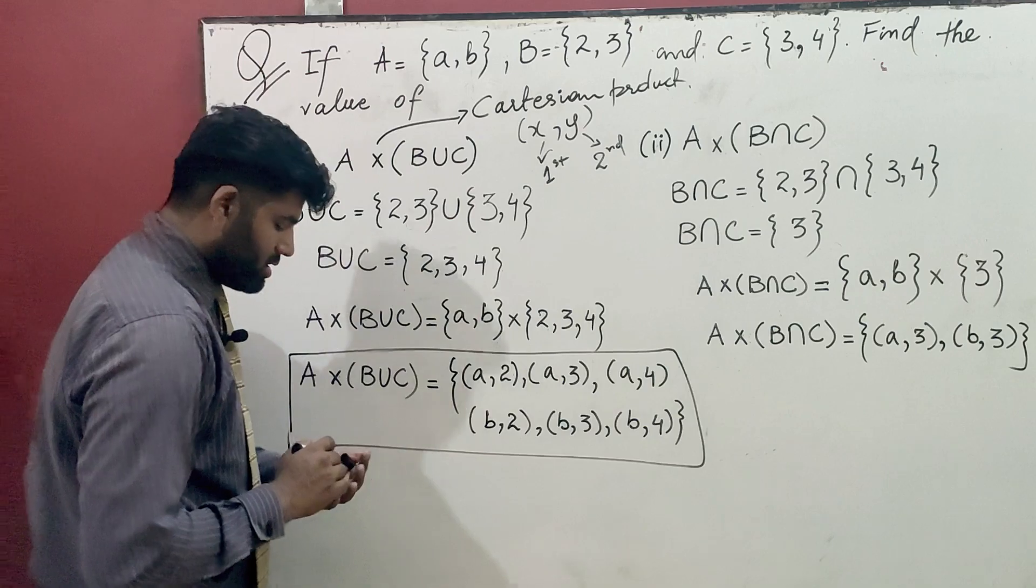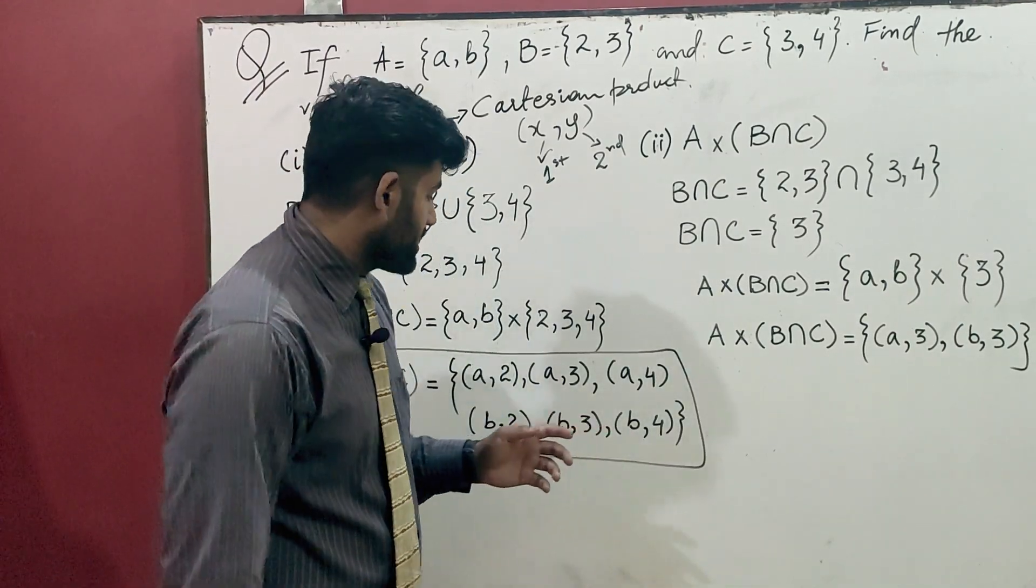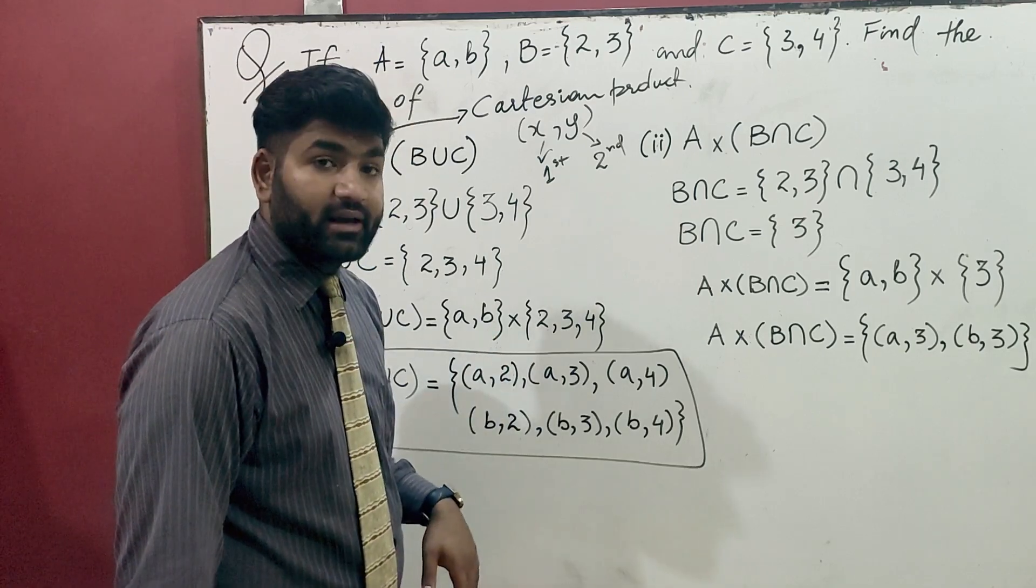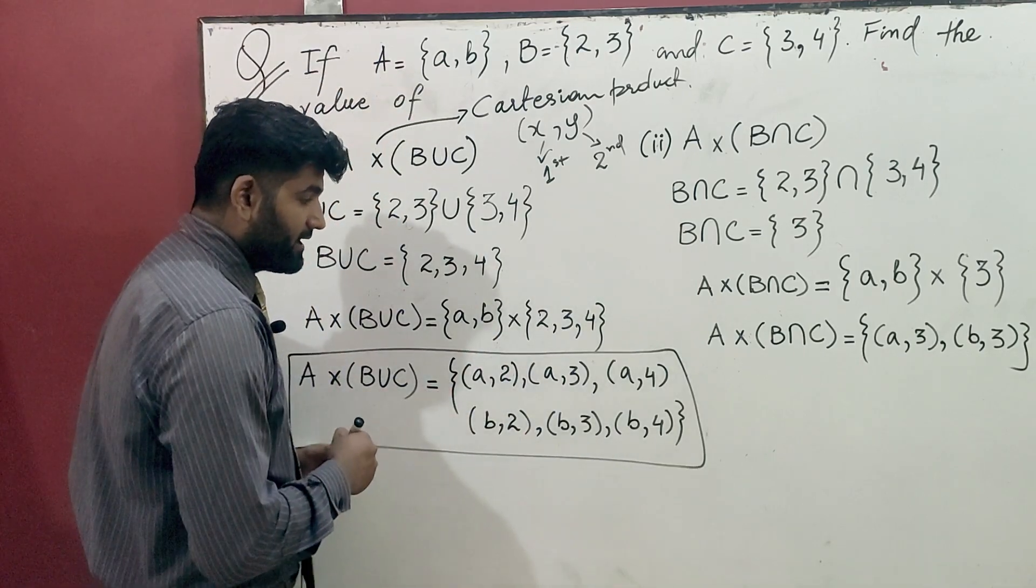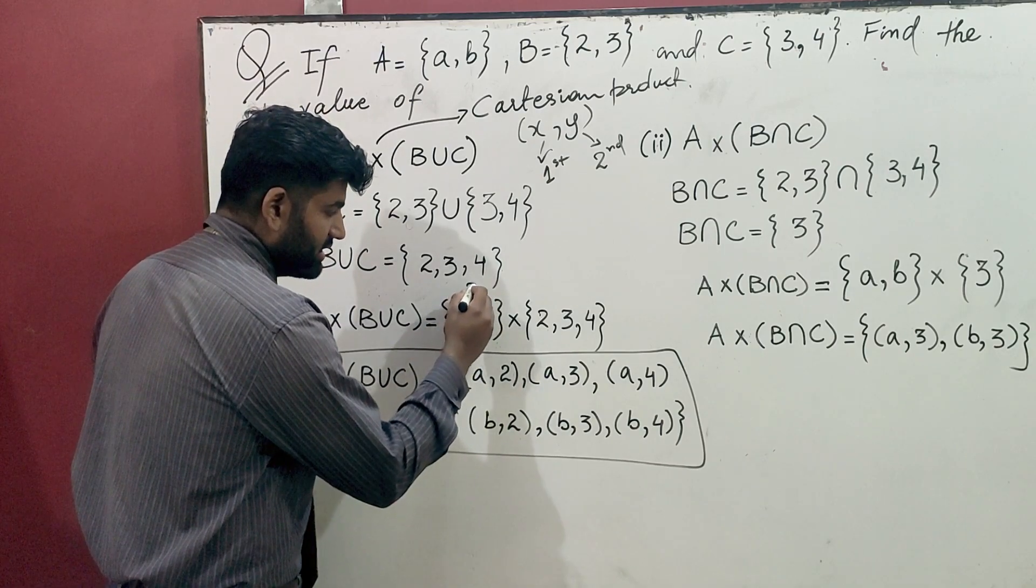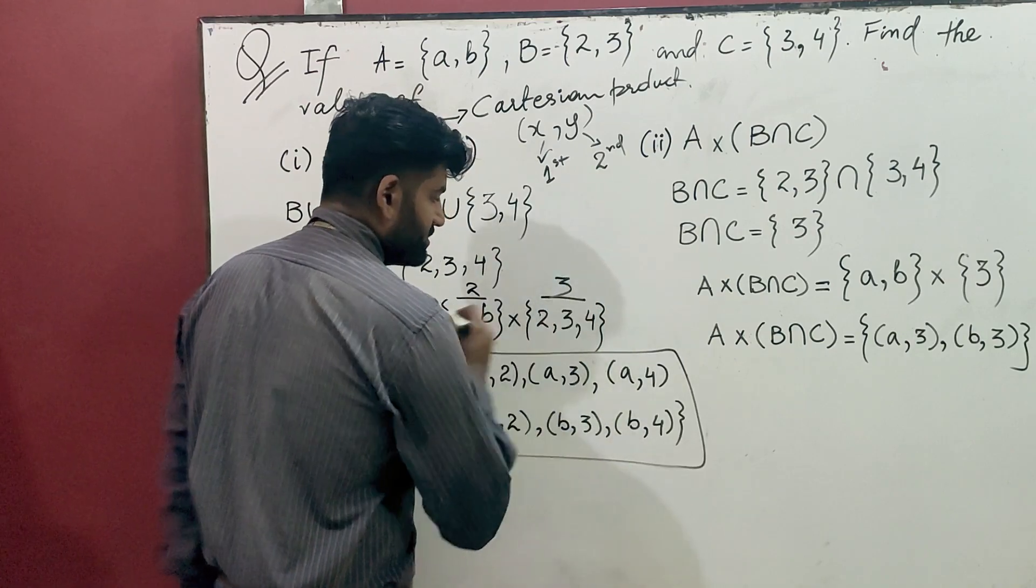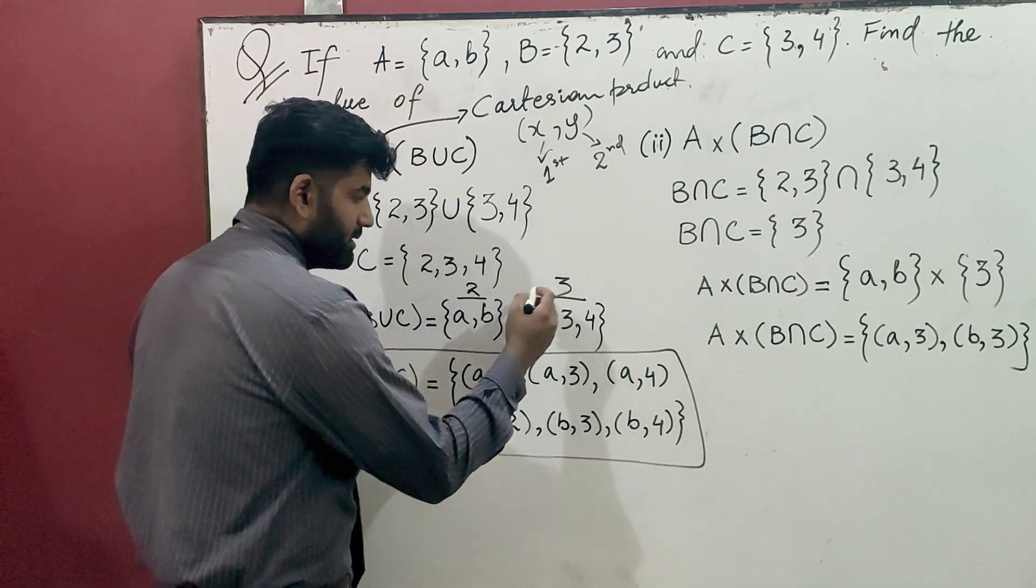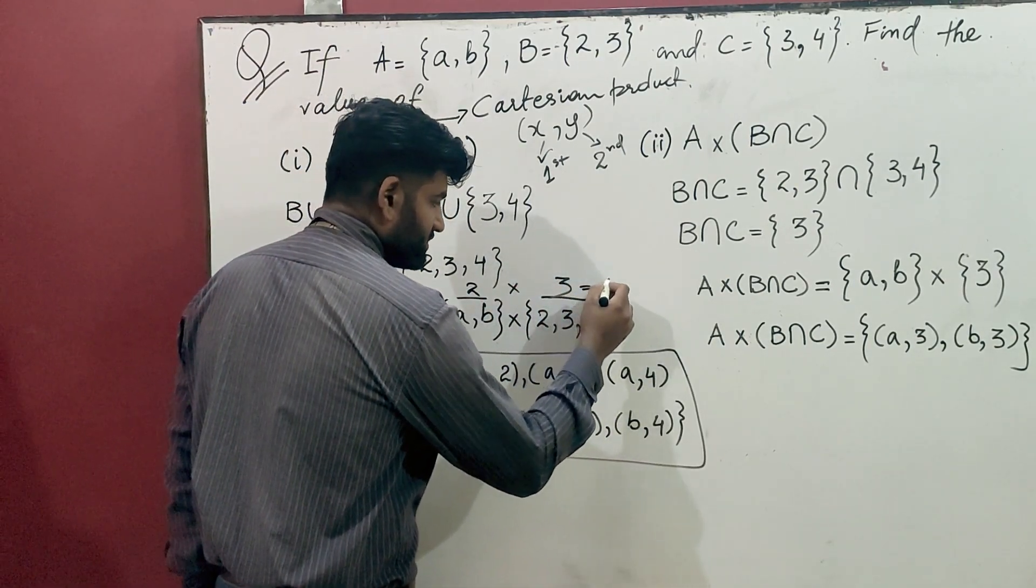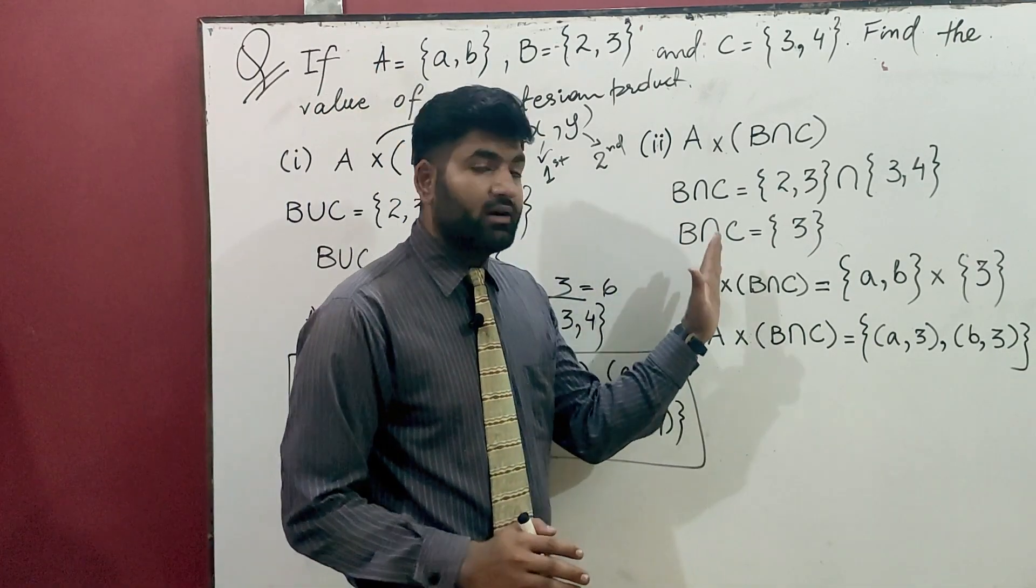This is how it is solved. So this is Cartesian product, so you can see it very easily in order pairs. For example, this set order was 2 and this set order was 3 basically. So you can see it in order, 2 multiplied by 3 equals 6 order pairs.